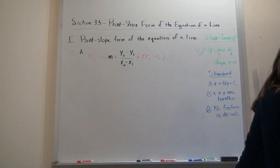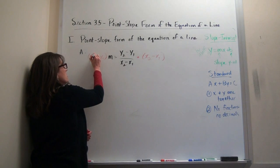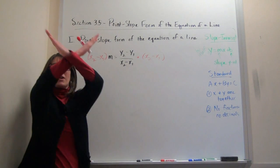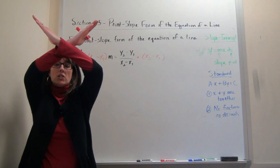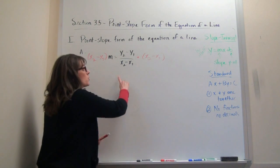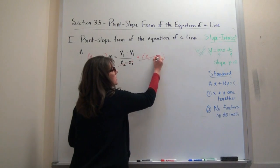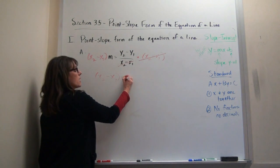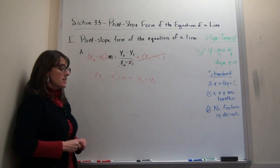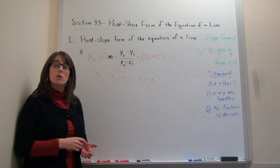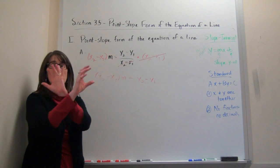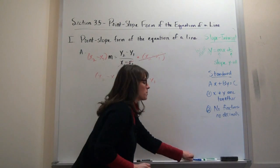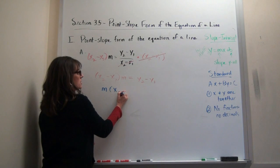When I multiply this side by x2 minus x1, on the left side the x2 minus x1 in the denominator cancels out with the x2 minus x1 we multiplied by. So what I'm left with is: x2 minus x1 times m equals y2 minus y1. Now I'm going to use the commutative property of multiplication to reorder: m times x2 minus x1 equals y2 minus y1.